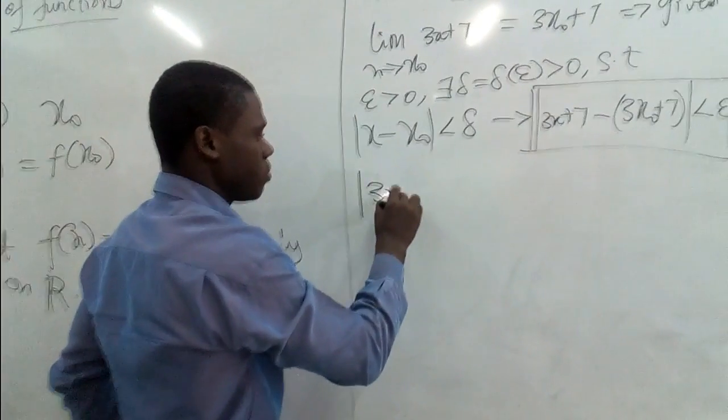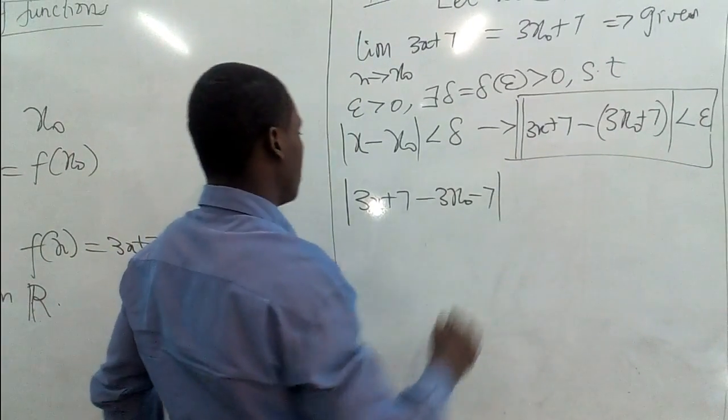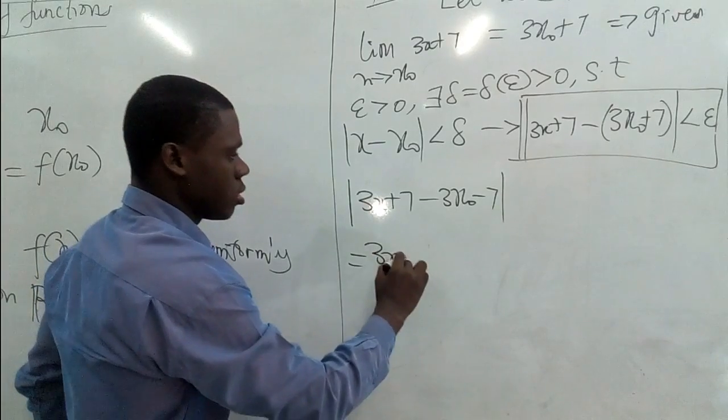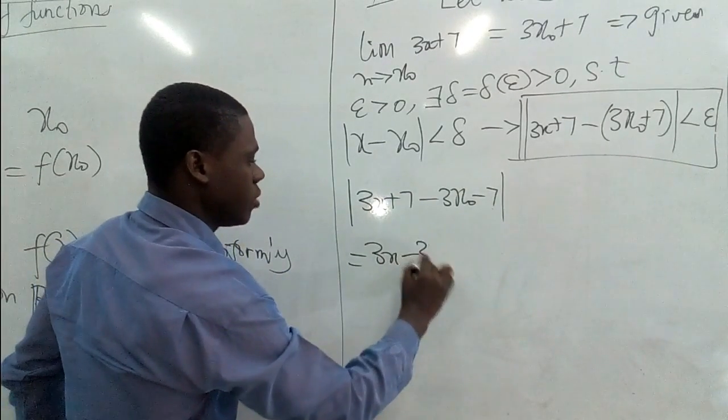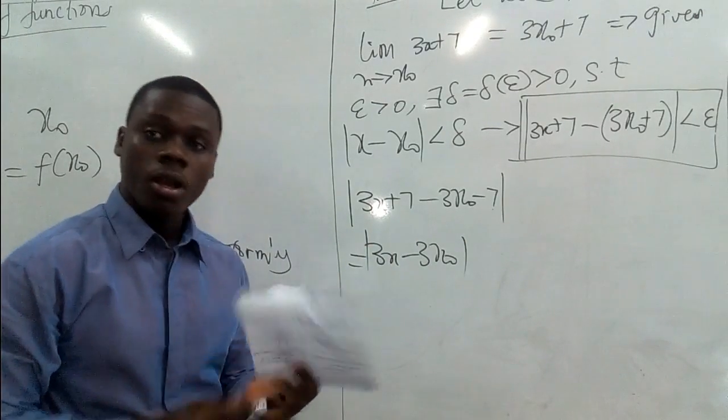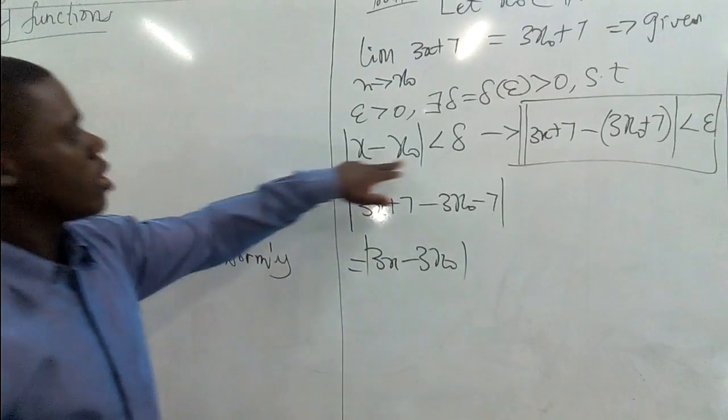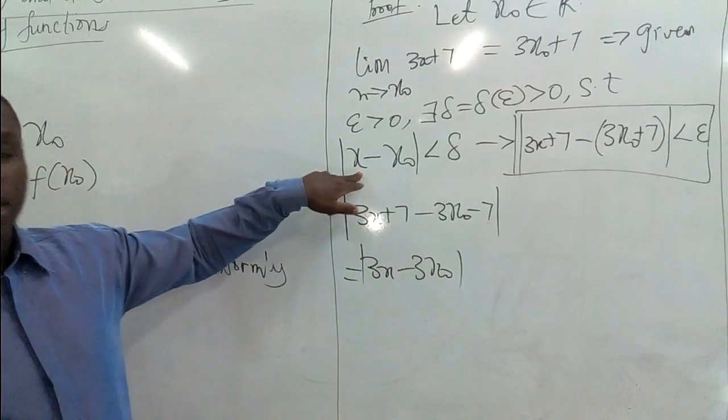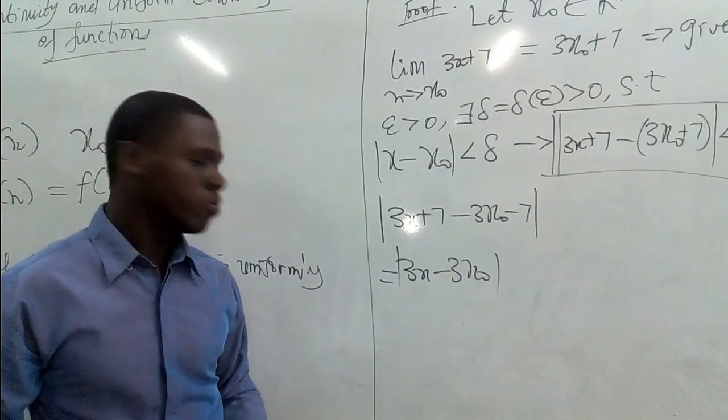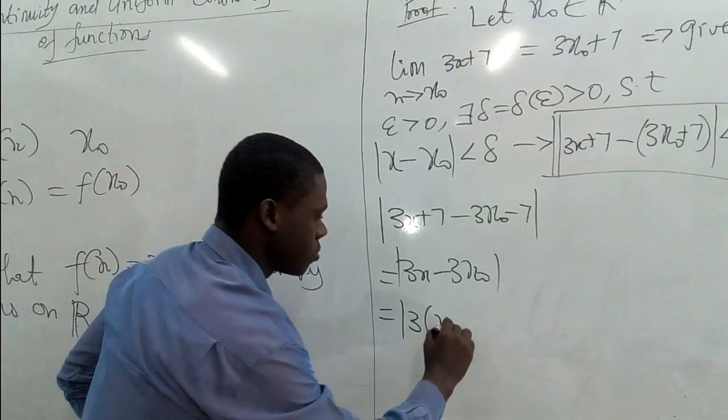So let's pick it from here. We have |3x + 7 - 3x₀ - 7|. And this is the same as saying that here we have 3x, and this nullifies this one, we have 3x₀, and still in the absolute value. And it's possible that we factor 3 out. You see, what we're doing is we are mindful of what we have here. We're always interested in getting something like |x - x₀| so that we can use this delta and that will lead us to epsilon. So we factor 3 out here. We have 3|x - x₀|.